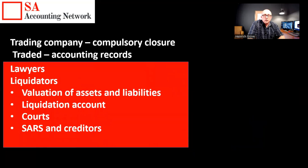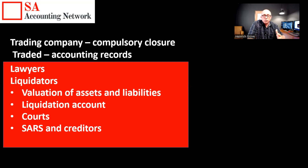The last scenario is a trading company undergoing a compulsory closure — this is where you're basically liquidating the company. If you've got one million rand worth of assets but two million rand worth of liabilities and you can't pay all your debt, this is the procedure you would follow. You would normally go see lawyers, they would get liquidators involved, they will do an evaluation of assets and liabilities, and draw up a liquidation account. If there's only one million rand available and two million rand worth of creditors, every person will just get half their money. This is quite a big formal process — normally there are courts involved, and SARS and creditors are also quite involved. This is very specialized and you would definitely need to get professional advice.